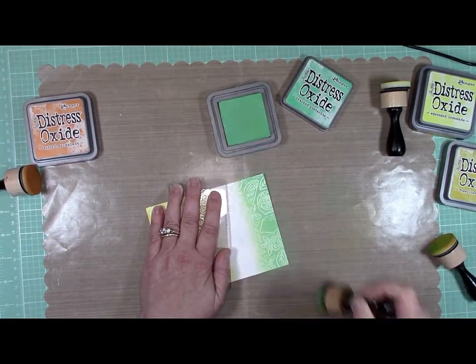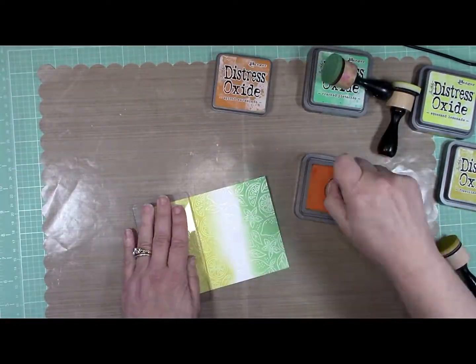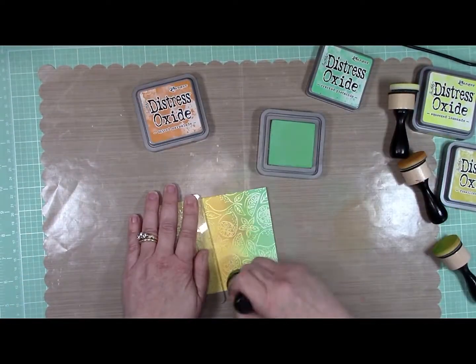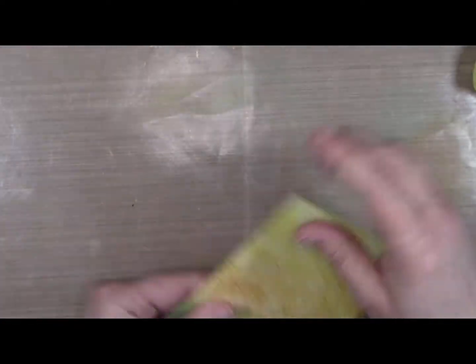You'll notice I started on one end with the yellows, and now I'm starting on the other end with the green and kind of blending the two together in the middle with orange. When you're done, you'll want to buff it clean so that the white embossing powder will shine through.